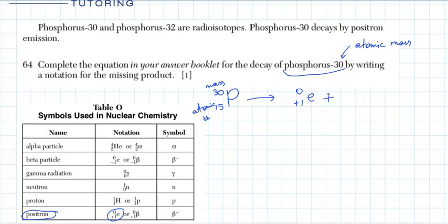Now we're just going to check for what is the missing atom. How do we do that? In order to do that we're going to look at the mass numbers and the atomic numbers.